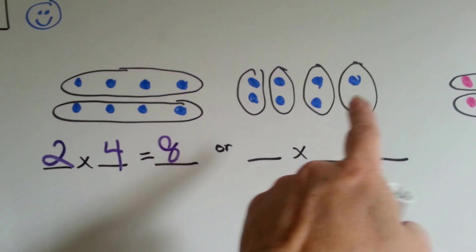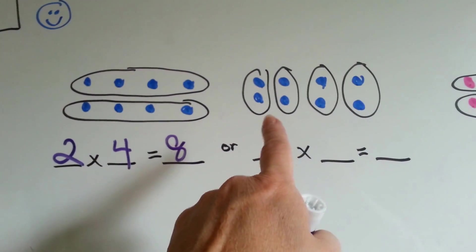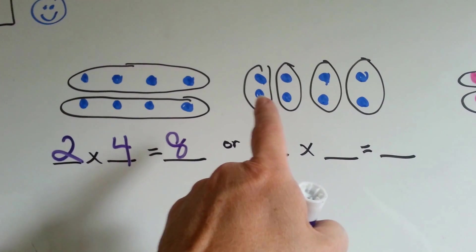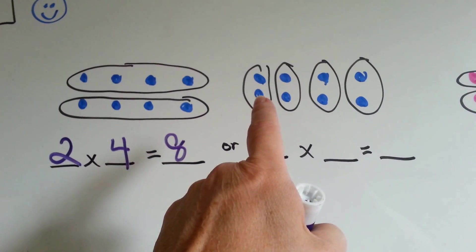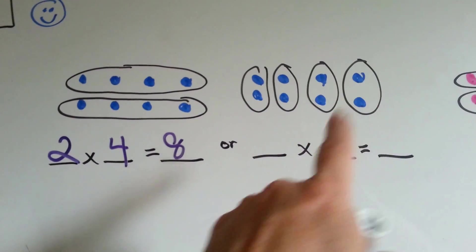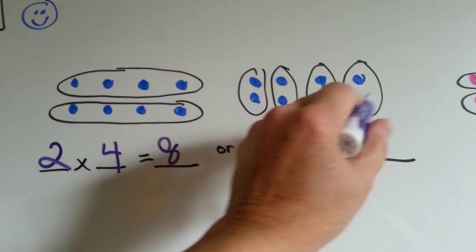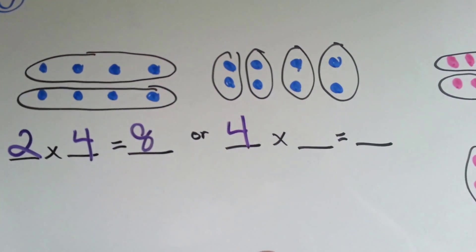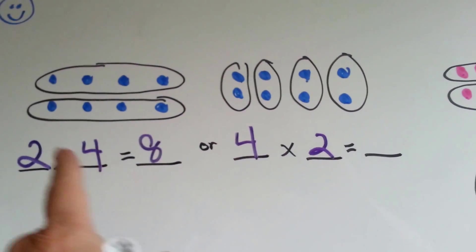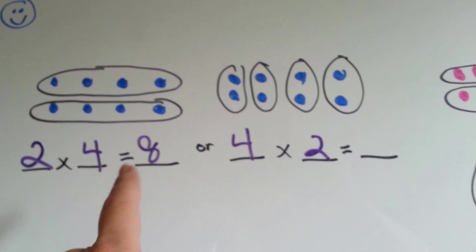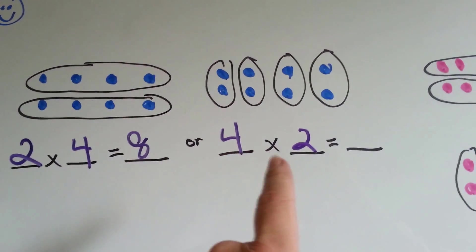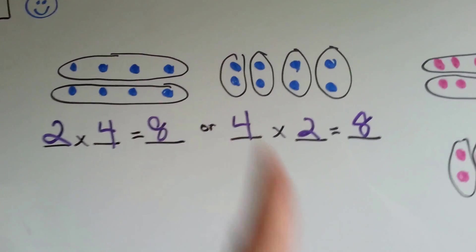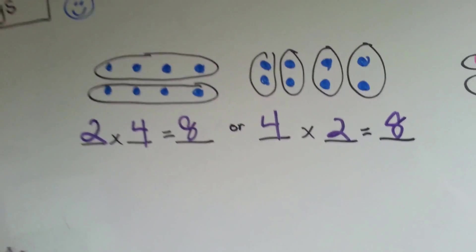Now look — I've still got the same amount of blue dots, but I've circled them differently in the black circles. Instead of putting four blue dots in each circle, there's only two. There are four black circles with how many blue dots in them? Two. Two times four equals eight, or four times two equals eight. Backwards or forwards, it has the same product, the same answer.